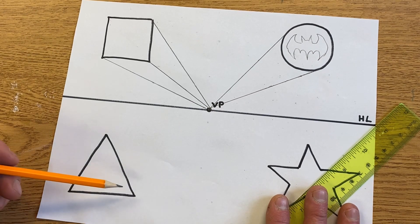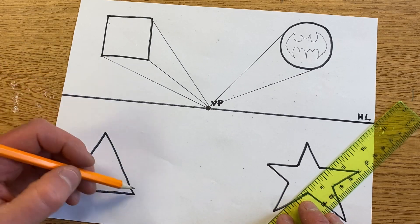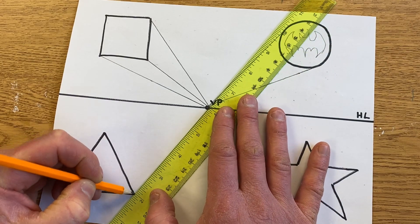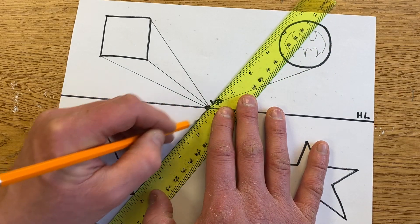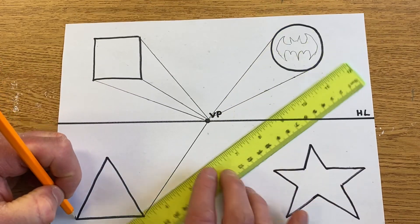The next shape we're going to do is the triangle in the bottom left corner. I'm going to start down here at this one, line it up going to the vanishing point. Again, all your lines are going to get drawn to that vanishing point. Now if I come over here to this one.